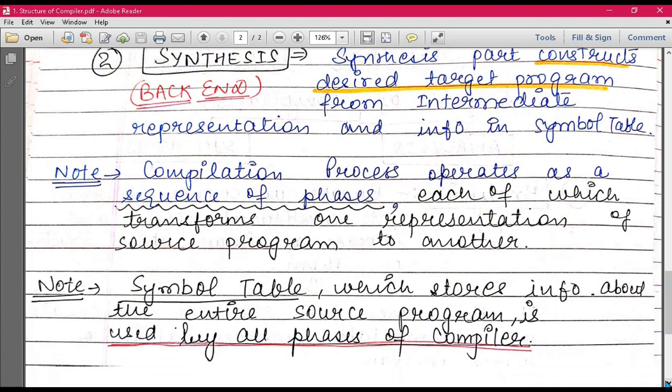Now, one important point is, compilation process operates as a sequence of phases, each of which transforms one representation of source program to another. So basically, when we study phases of compiler in detail, what happens is that you have different phases in the overall compilers. So every phase has an input or output. And every phase has a different output.